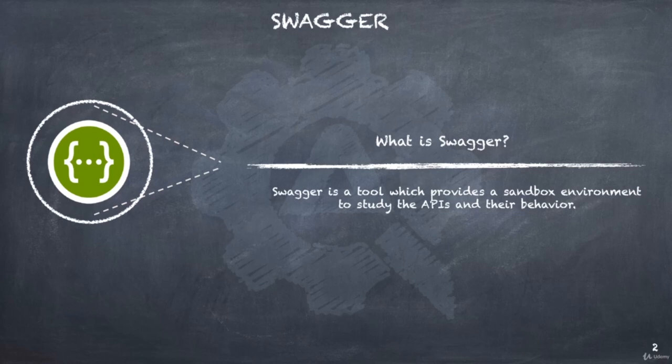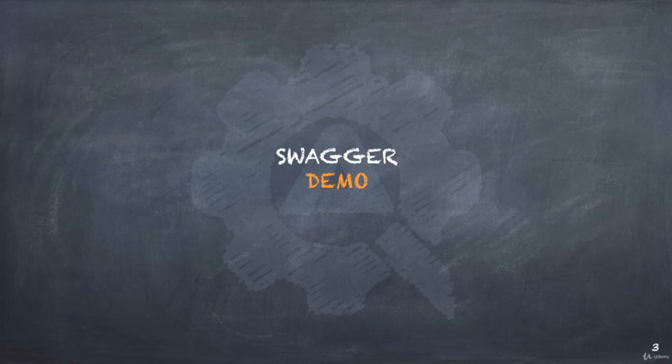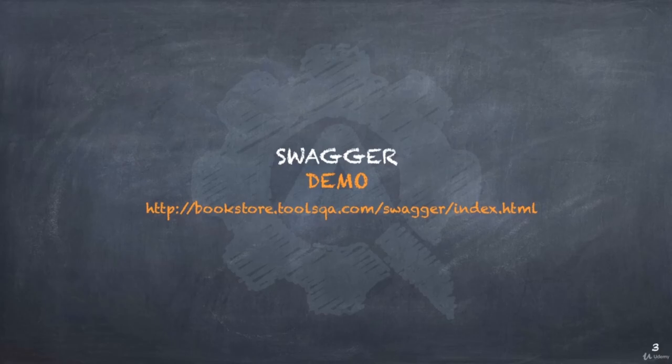Swagger is a framework for describing the API using a common language that is easy to read and understand. You can think of it as a blueprint for a house — you can use whatever building materials you like, but you can't step outside the parameters of the blueprint. Now let us look at how the Swagger tool works and navigate to the Bookstore API Swagger document. Let us launch it in the browser.